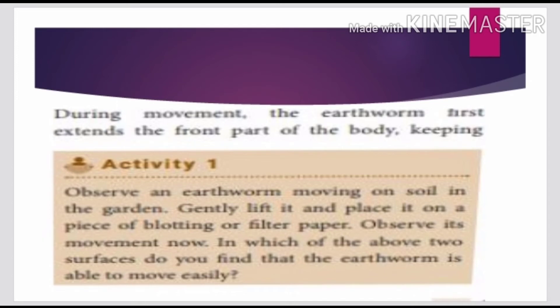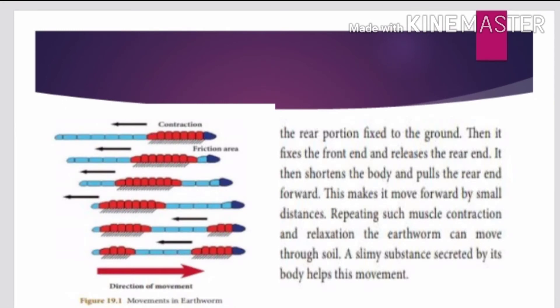During movement, the earthworm first extends the front part of the body, keeping the rear portion fixed to the ground. It then fixes the front end and releases the rear end. It then shortens the body and pulls the rear end forward. This makes it move forward by a small distance.